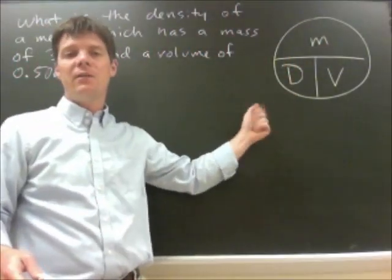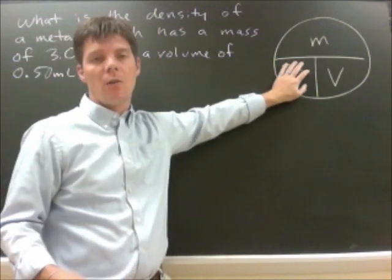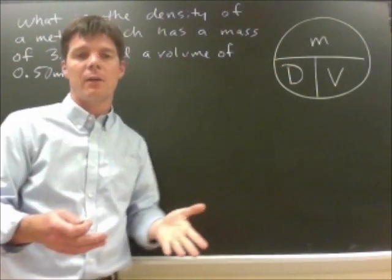Now we can use the density circle to review this. We know that density, if we cover D, will be equal to mass divided by volume. We can use the circle to solve all the other relationships that we would have for any other density problem.